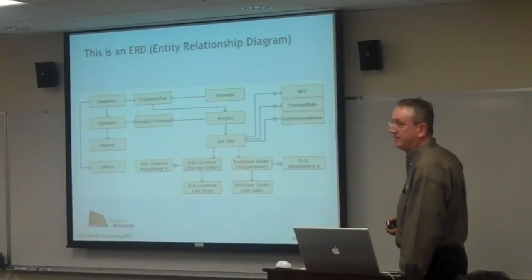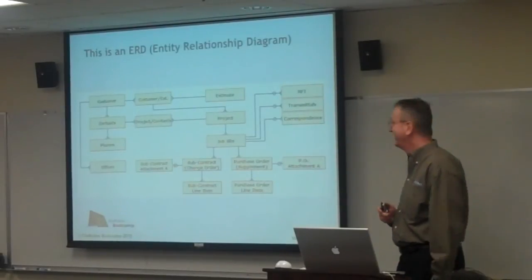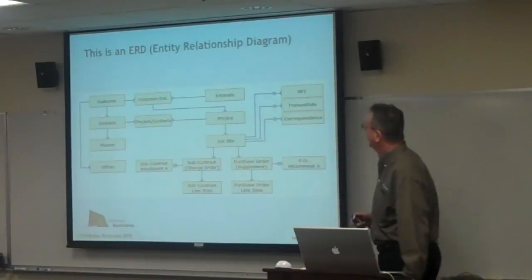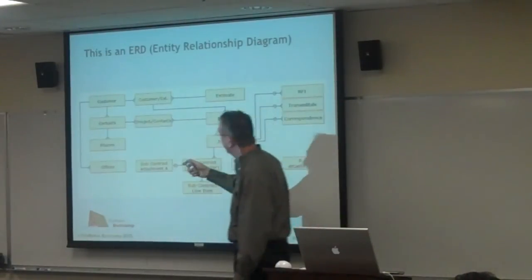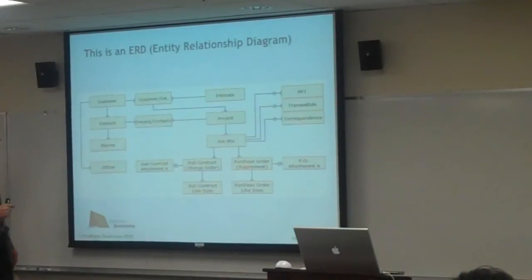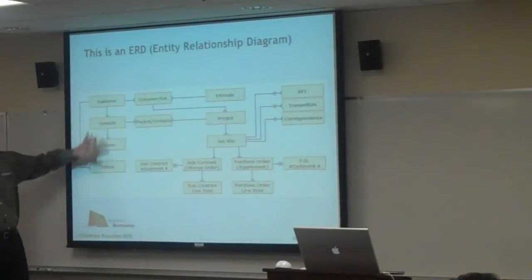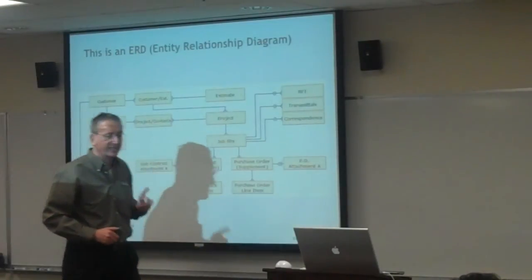Here's an ERD — sort of — built in FileMaker using rectangles, lines, and circles, for a project actively being worked on. It's not real complicated: you've got customers, contacts, and phones. The phones are attached to the contacts in the system. There are also offices, and a relationship between the office and the phones. So this actually ends up with a whole lot more relationships than are at the ERD level.